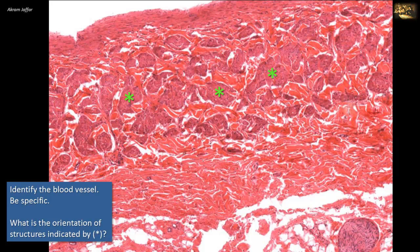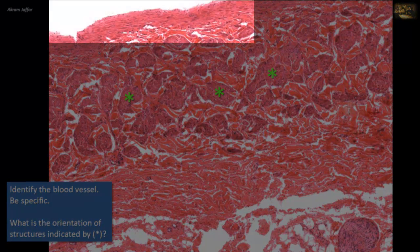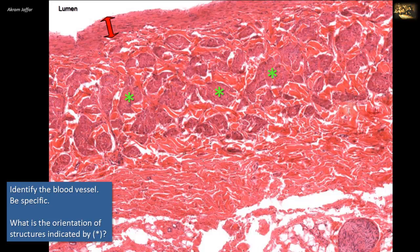Identify the blood vessel — be specific. What is the orientation of the structures indicated by the asterisks? The luminal surface has a tunica intima lined by endothelium. There is also a very thin tunica media composed of circularly arranged smooth muscle fibers — the spindle-shaped nuclei of these fibers confirm the circular arrangement. There is very little elastic fiber in the wall, with no internal or external elastic laminae as would be seen in a muscular artery. So this is not an artery — it is in fact a vein, and like other veins, it has the tunica adventitia as its thickest layer.